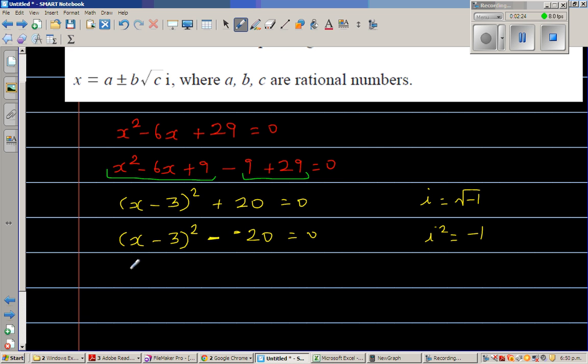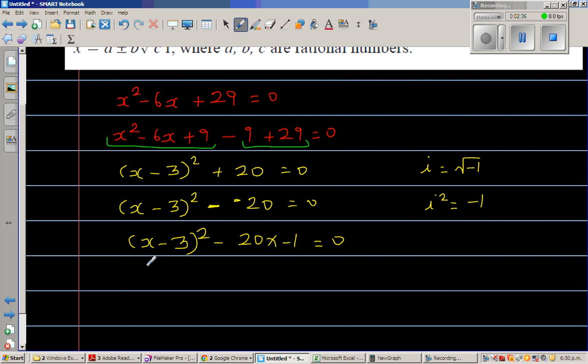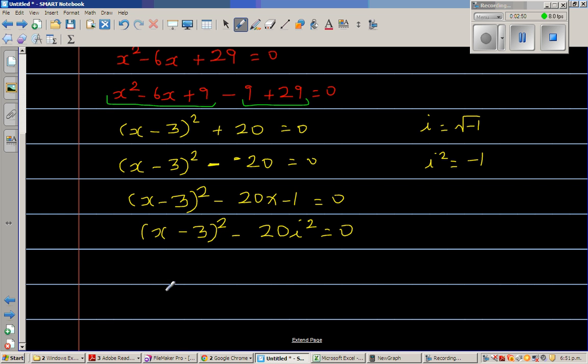This is (x - 3)² minus, instead of minus 1, I'm going to write i² because minus 1 is nothing but i². So this becomes (x - 3)² minus 20 is 4 times 5...